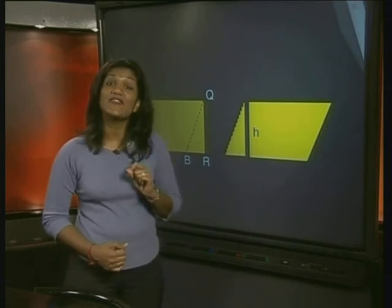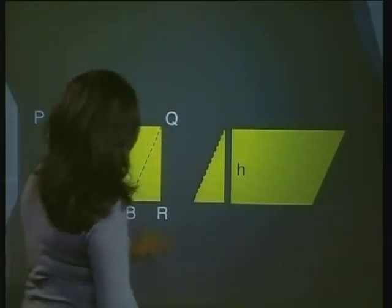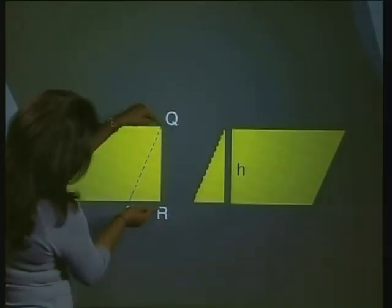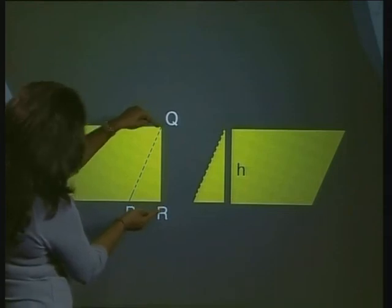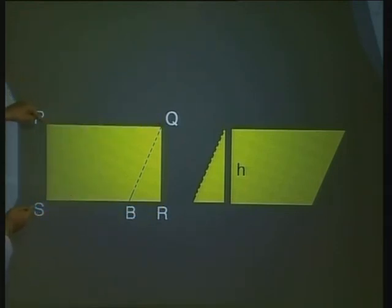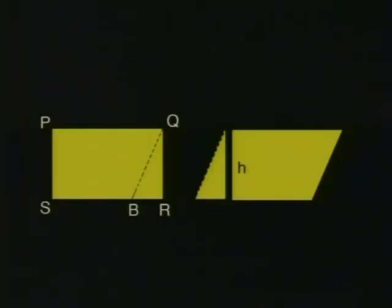Pretty clever, hey? But will this work with any rectangle? Will this part of the rectangle QR always fit on this part of the rectangle PS? Yes it will — the opposite sides of a rectangle are equal and parallel. So we can mark that PS is equal to QR. PS and QR also represent the height of the rectangle.